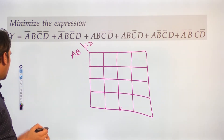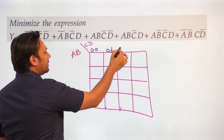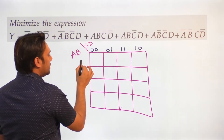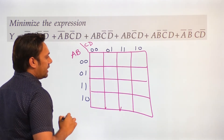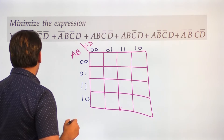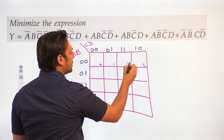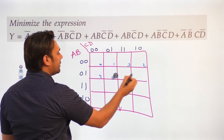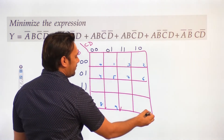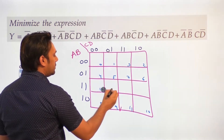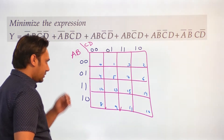Now let us number them. This is 00, 01, 11, 10 — and 00, 01, 11, 10. I can number each of these cells: cell number 0, 1, 2, 3, 4, 5, 6, 7, 8, 9, 10, 11, 12, 13, 14, and 15. In this way I can number each of these cells.